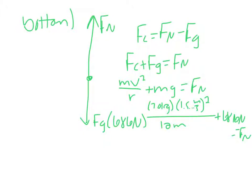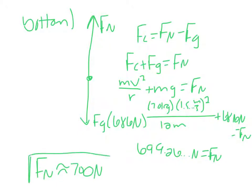Multiplying and adding this together we get 699.26 keeps on going newtons for the normal force. So again, only one sig fig, it will round to 700 newtons.